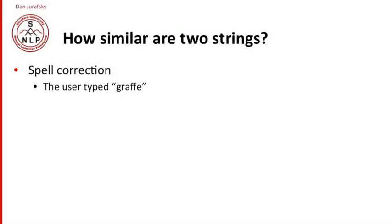So let's pick a particular example, spell correction. The user typed G-R-A-F-F-E. What do they really mean? And one way of operationalizing this question is asking which of the following words is closer to the letters that they typed: graph, graft, grail, or giraffe.